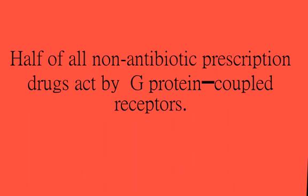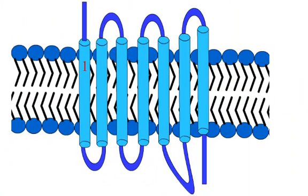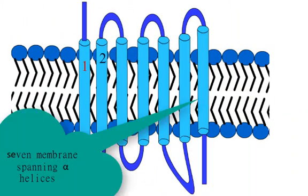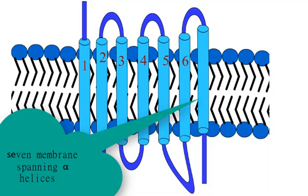The G-protein-coupled receptor's activation accounts for the actions of almost half of all non-antibiotic prescription drugs. The G-protein-coupled receptor comprises seven membrane-spanning alpha helices coupled with G-protein.